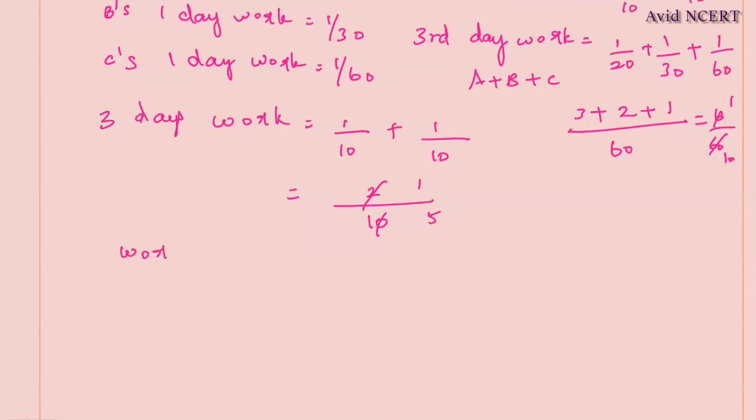Work completed in 3 days equals 1/5. So 1/5 of work is done in 3 days. How many days will be taken to complete whole work? 1 is the whole work.